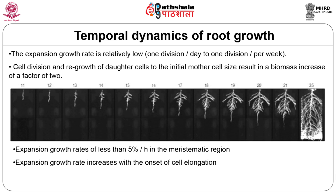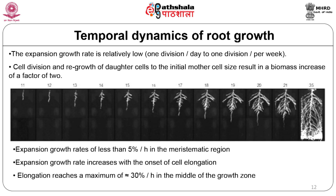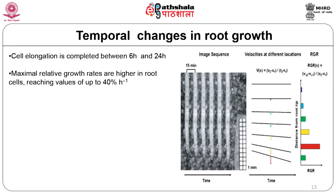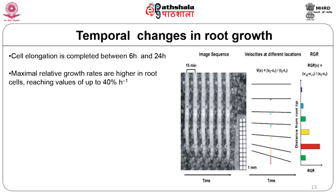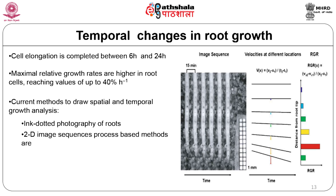This accounts for expansion growth rates of less than 5 percent per hour in the meristematic region. Expansion growth rate increases with the onset of gross cell elongation, soon reaching a maximum of approximately 30 percent per hour in the middle of the growth zone. For most species, cell elongation is typically completed between 6 and 24 hours. Ink-dotted photography of roots or 2D image sequences are some methods used to study spatial and temporal growth analysis of roots.